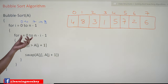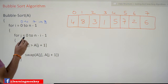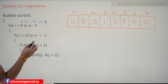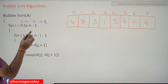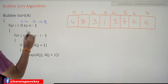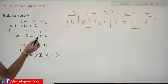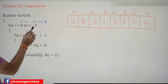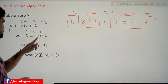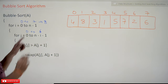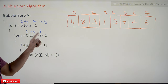Now, the inner j-loop works as follows: j goes from 0 to n minus i minus 1. In the first iteration, when i equals 0, this becomes n minus 0 minus 1, which is 7 — since n equals 8. In the second iteration, when i equals 1, this becomes n minus 2, which is 6. So the j-loop iterates from 0 to 6. It's very important to understand why we use n minus i minus 1.